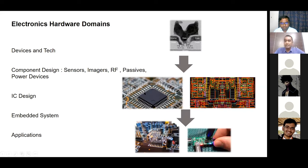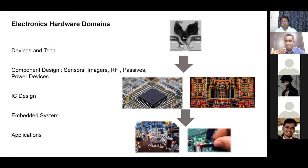The second area is component design. There are many different kinds of sensors — temperature sensors, humidity sensors for an AC unit, image sensors, microphones. A microphone senses pressure variations in the air created by your voice and converts them into electrical voltage. There are many different kinds of sensors, and designing those sensors with different semiconductor materials or other materials is itself a big area.